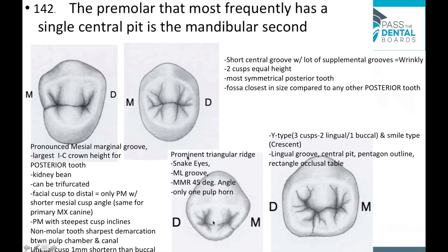The mandibular first premolar has a very prominent triangular ridge, snake eyes, a mesiolingual groove, and a mesial marginal ridge at a 45-degree angle — so from the mesial you can see more of the occlusal table. It's the premolar with only one pulp horn. The mandibular second premolar can be Y-type or crescent type; the Y-type has two lingual cusps and one buccal cusp with three fossae including one central fossa. The crown outline is a pentagon and the occlusal outline is a rectangle.